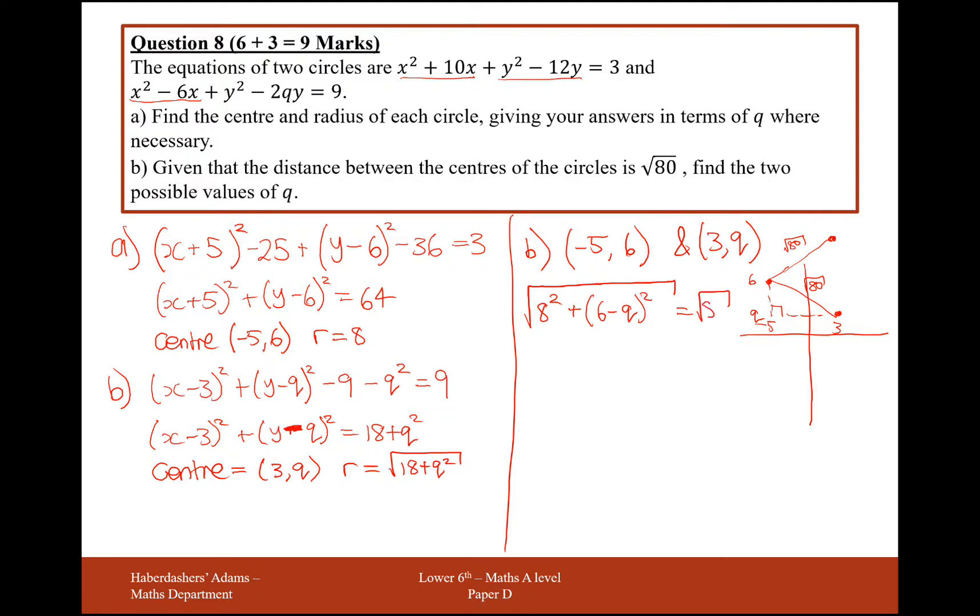And this will equal a distance of the square root of 80. Now, if q is actually up here and q is bigger than 6, then it doesn't really matter, because even if we get a negative in this bracket here, it's still going to be squared, so we don't need to worry about any negatives appearing in the square root there. So, expanding this, we're going to get 64 plus 6 minus q squared equals 80. So, squaring both sides here, take away the 64 onto the side, you get 6 minus q squared equals 16.